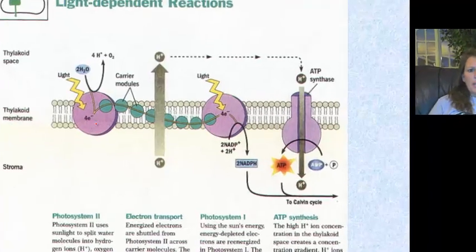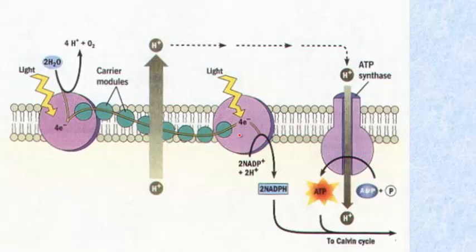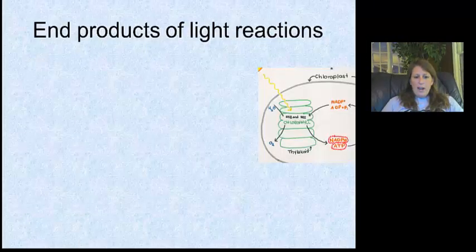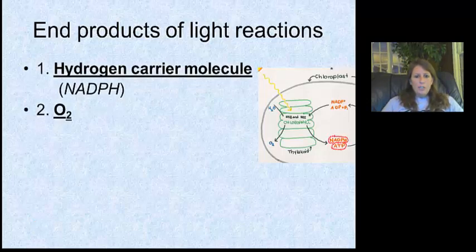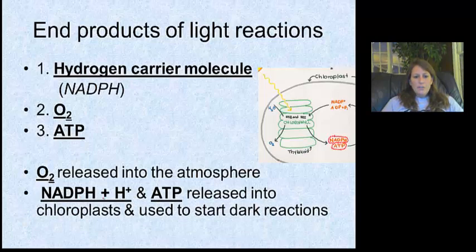Here's another illustration: here's my pigment, the light, and the splitting of the water. Here's the thylakoid membrane and the space — they just flipped the orientation. Here would be Photosystem I, more light, and the hydrogen carrier molecule. ATP synthase helps recharge or make more ATP. Here's the oxygen being released. The end products are the hydrogen carrier molecule, oxygen, and ATP. The oxygen is released into the environment, while the hydrogen carrier molecule and ATP — the other two products of light reactions — go on to the dark reactions.